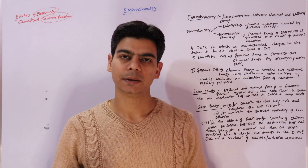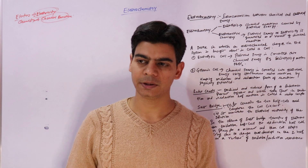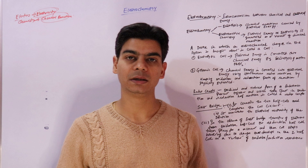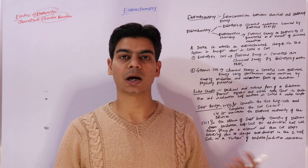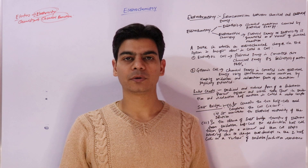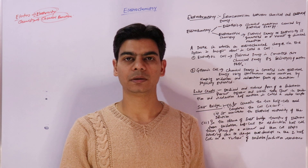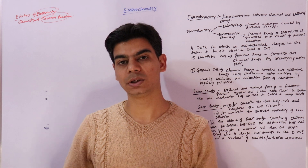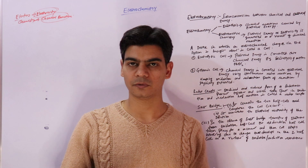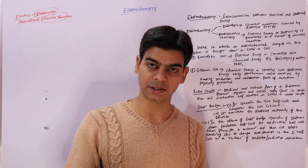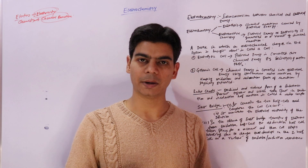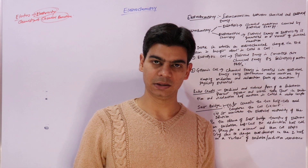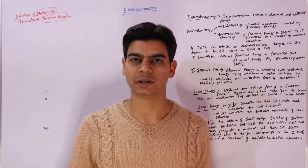There are two types of chemical reactions we will mainly study in electrochemistry. The first type requires electricity to initiate or start the reaction. The second type produces electricity as a result of the chemical reaction. The most common example of the second type is cells and batteries — chemicals in the battery react to produce electricity.